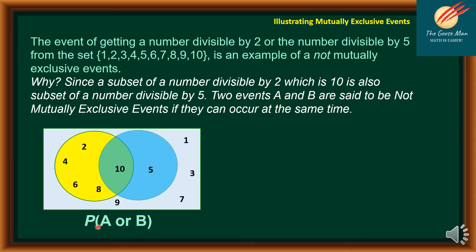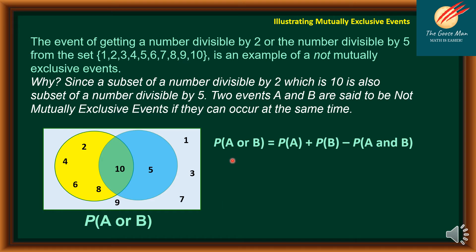Looking at our Venn diagram, the yellow circle contains multiples of 2 and the blue circle contains multiples of 5 up to 10. There is a common element — 10 — in the intersection. The numbers 1, 3, 7, and 9 are outside both circles since they do not belong to either set. To find the probability of A or B when events are not mutually exclusive: P(A or B) = P(A) + P(B) − P(A and B).